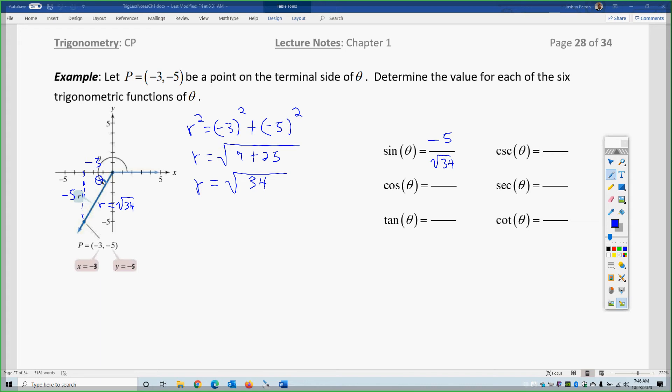Cosine is x over r, and if you look at the triangle, it's also adjacent over hypotenuse. And, of course, the last one, tangent, is y over x, which is also, if you look at the triangle using the angle, adjacent, and that is opposite. So, opposite over adjacent will give us 5 thirds also.